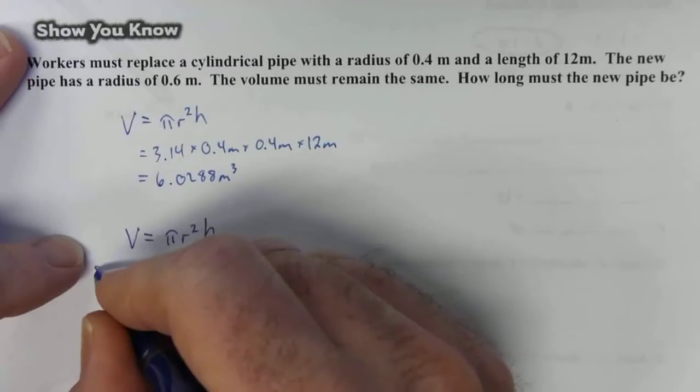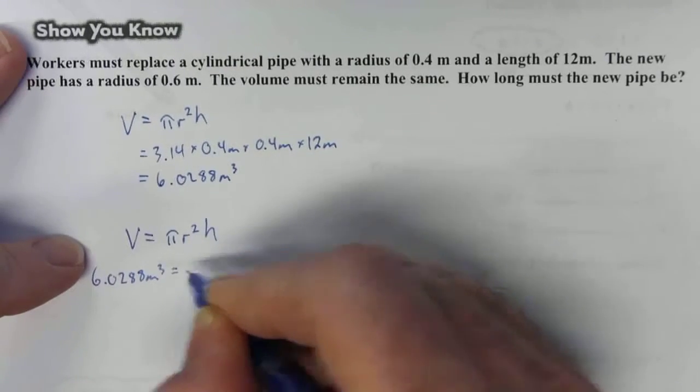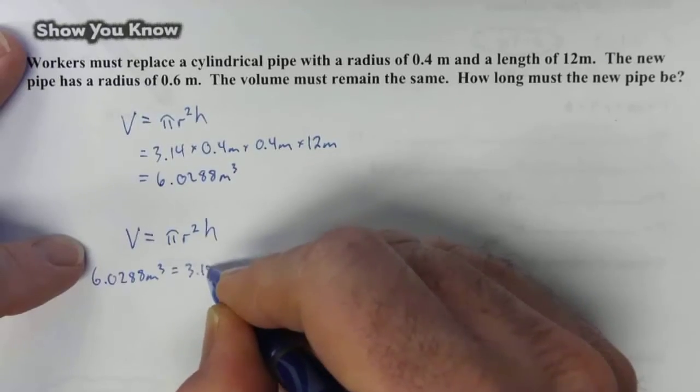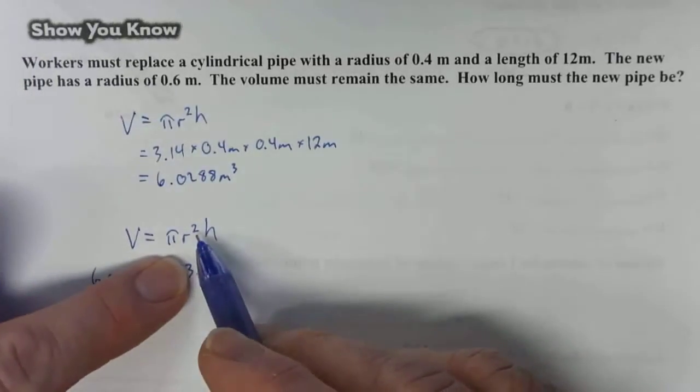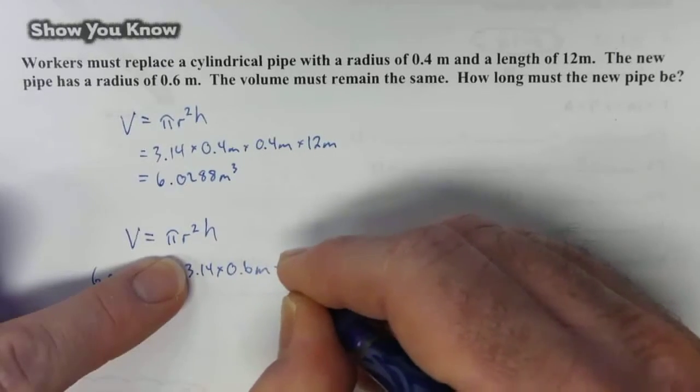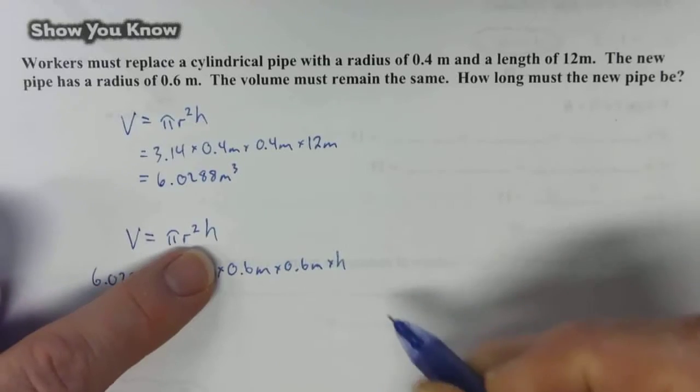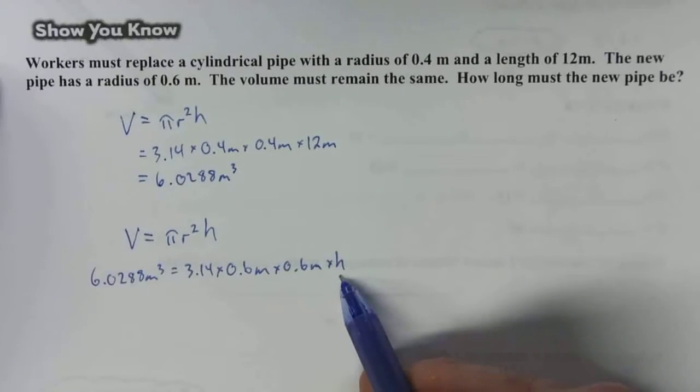This is our new volume, so 6.0288 meters cubed is equal to pi, which is 3.14, times our new radius, which was 0.6 meters, times 0.6 meters, times h. That's what we don't know and that's what we're solving for.